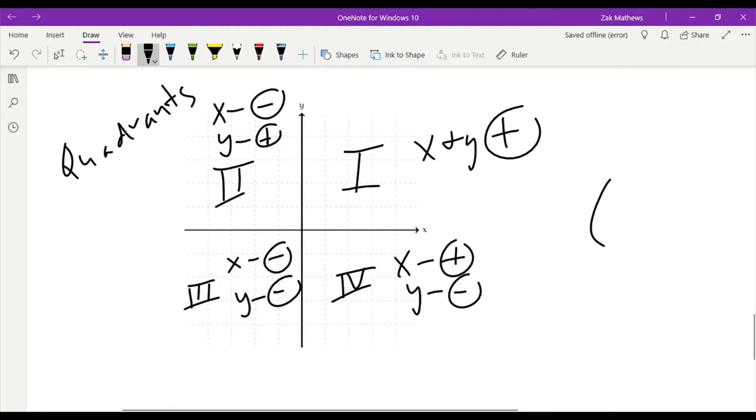This just allows us to identify where things are very quickly. If I were to give you the point negative two, negative one, I can graph that right about here. I could say it's in the third quadrant, which quickly identifies where it is. Or if I gave you the point five, negative seven, that would be in the fourth quadrant. So it gives us a way to talk about the location of where things are.